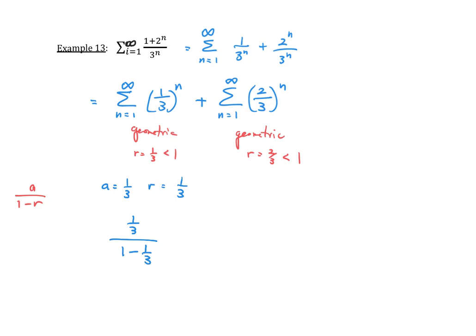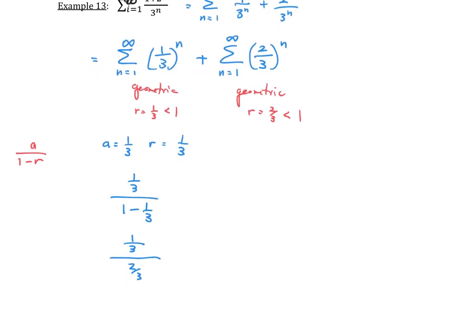And that denominator is going to be 1 third divided by 2 thirds. So, somehow I've run out of room. Let me scroll a bit more here. So, that's going to give us the end result of 1 half, since dividing by a fraction is the same thing as multiplying by a reciprocal.